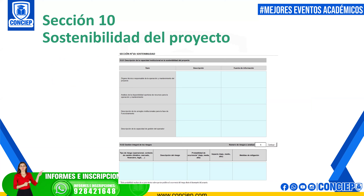Then move to Section 10 — the project sustainability. Here, describe what the project requires to continue operating in years 1, 2, 3, and beyond. Consider whether the entity or other entities need to make modifications to their structure or management to ensure sustainability.